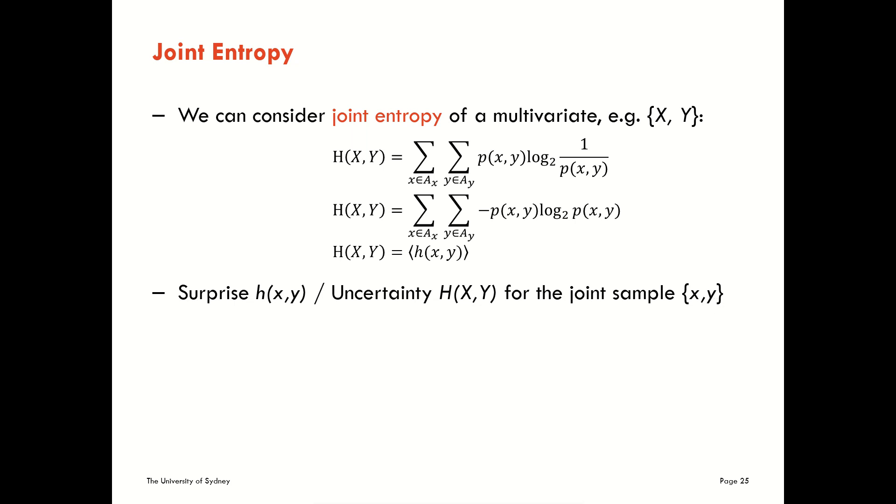So here we simply think about pairs or higher order sets of events. Let's think about the game of guess who. So we could ask what's the Shannon information content about finding out that somebody's hair was blonde in the game. We then might think about a joint set of events. We might say what's the Shannon information content of finding out that the person's hair is blonde and their eyes are blue.